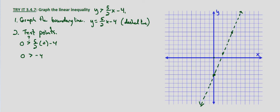So that indicates that we should shade on that side. Let's test a point on the other side just to be sure. Let's use 3, 0, this point right over here.